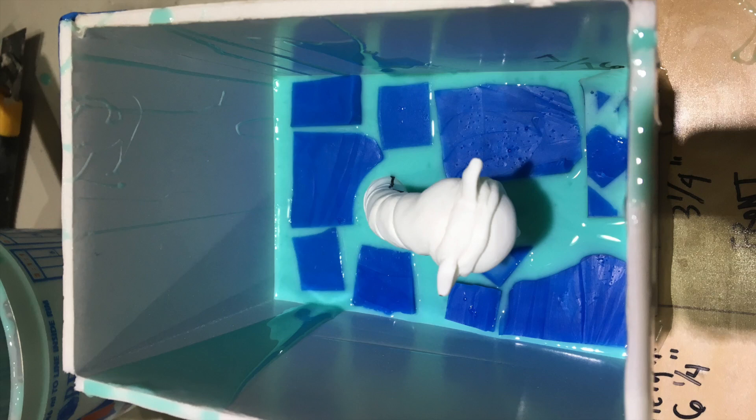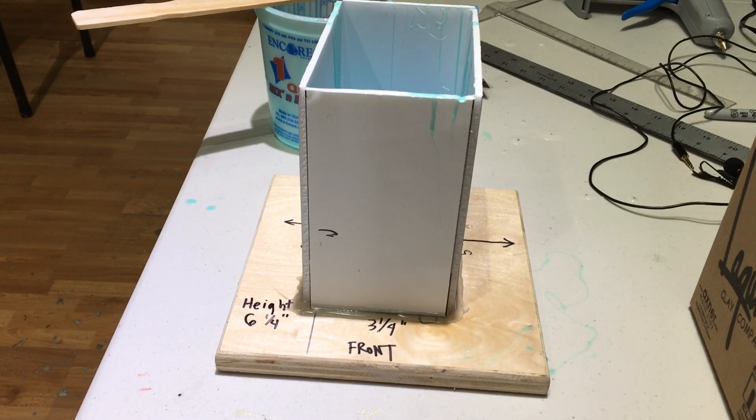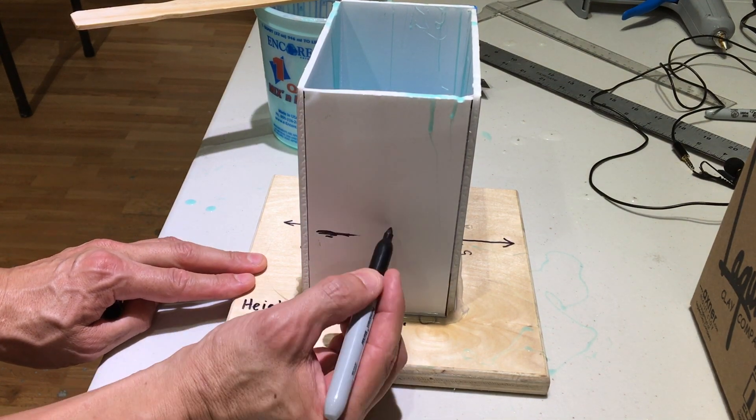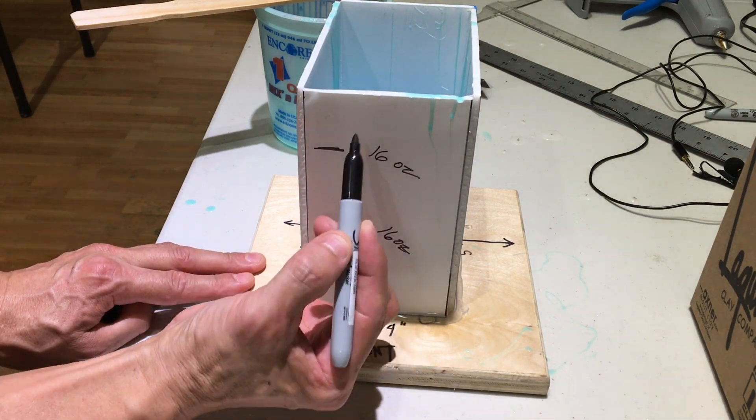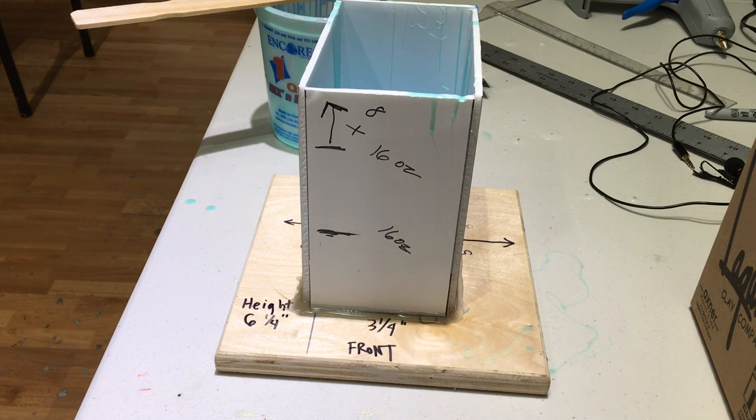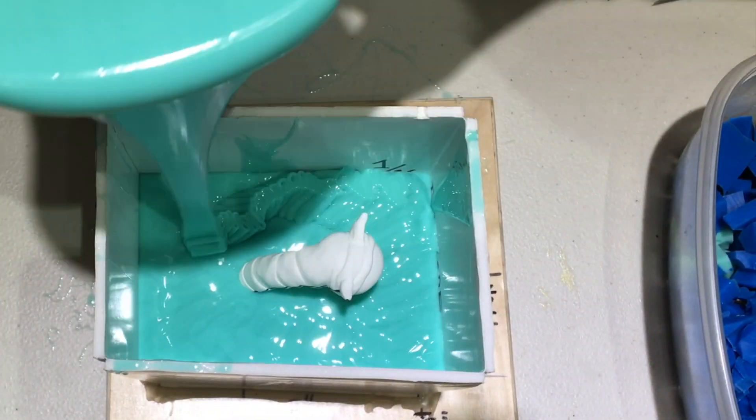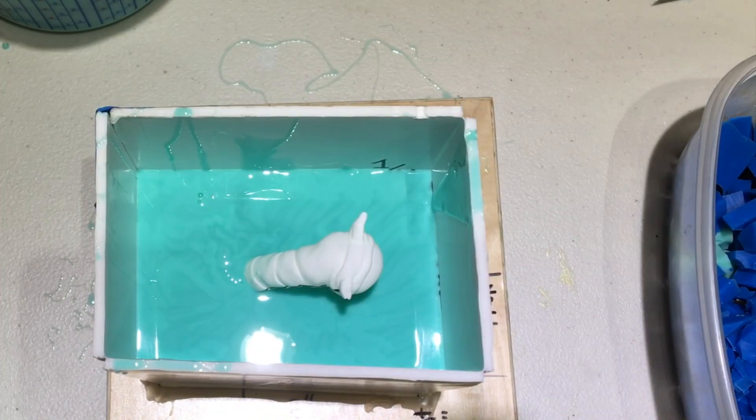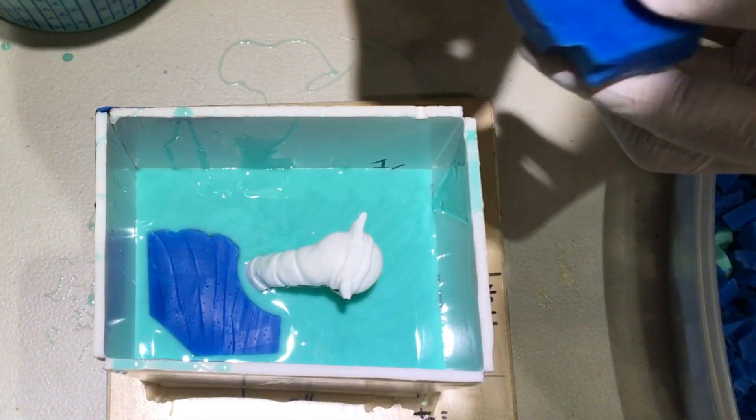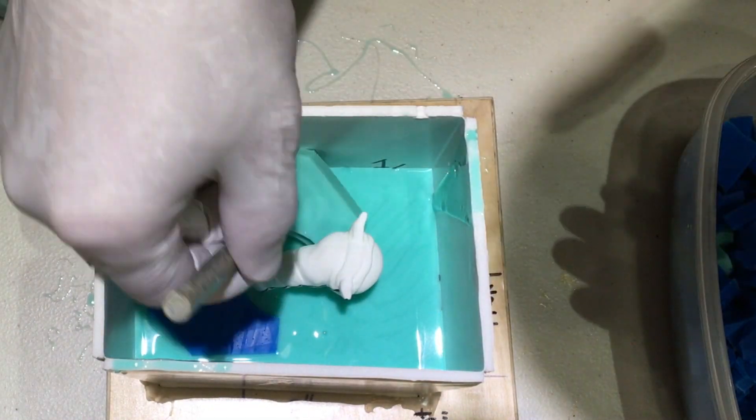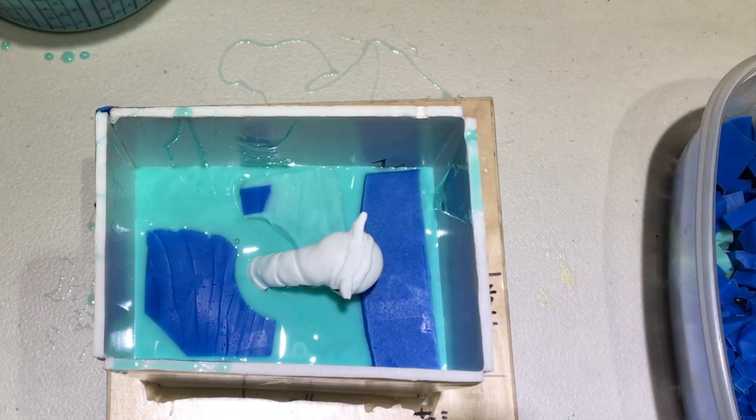So this is what it looks like after the first batch of silicone. And now that I know that 16 ounces fills it up to about this line, I can kind of guesstimate how much more I'm going to need to fill the entire box. So I wait about 15 minutes before I mix the second batch up. And this just allows the first half to kind of stiffen up a little bit and lock all those little pieces in place.